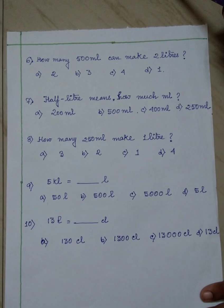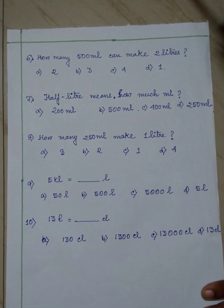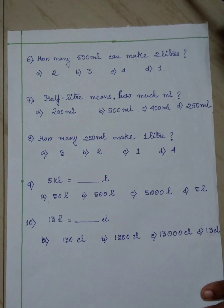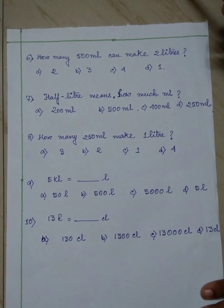Next eight number question is, how many 250 millilitre make 1 litre? The options are 3, 2, 1 and 4. You have to take the correct option.